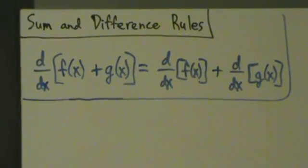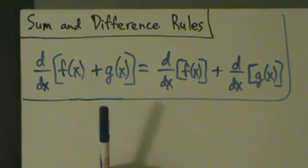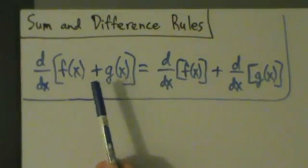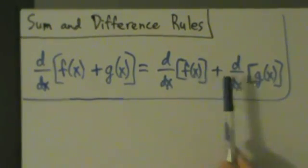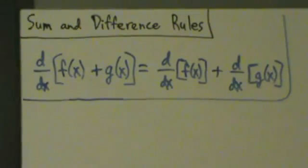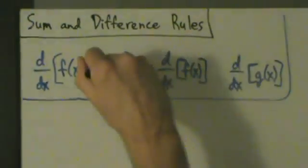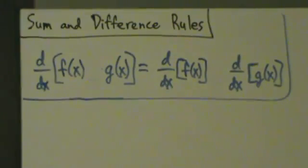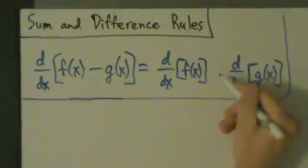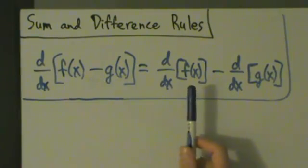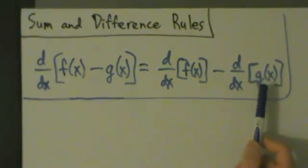Let's talk about the sum and difference rules for derivatives. The sum rule says that if you want to take the derivative of f plus g, then that's the same thing as the derivative of f plus the derivative of g. Likewise, the difference rule says the same thing but with subtraction: the derivative of f minus g equals the derivative of f minus the derivative of g.